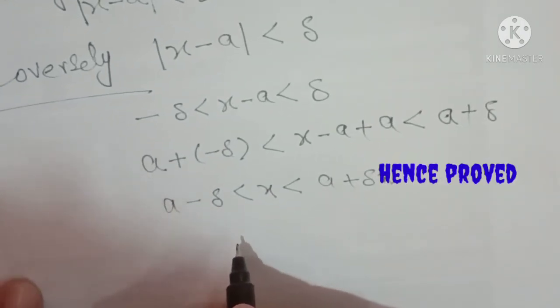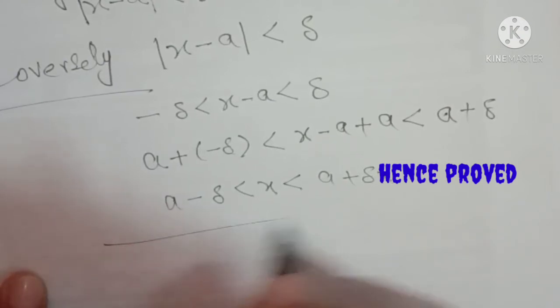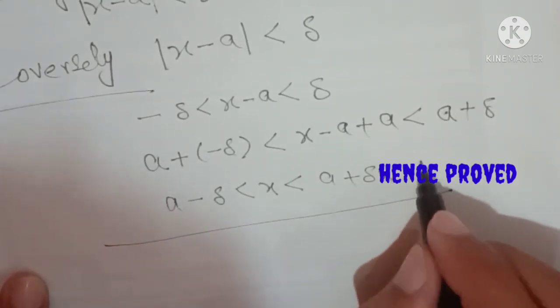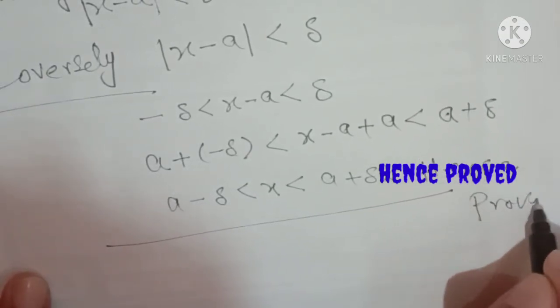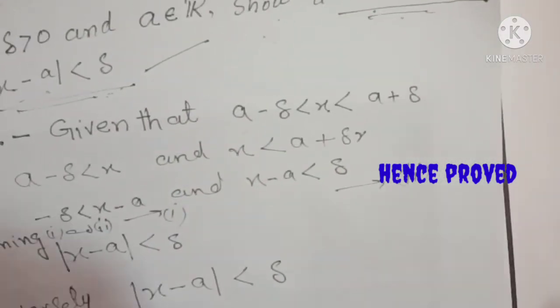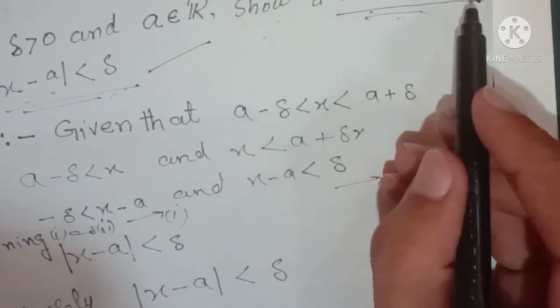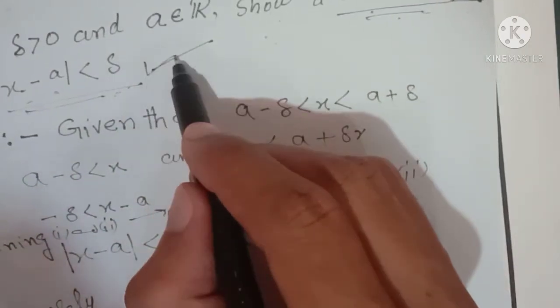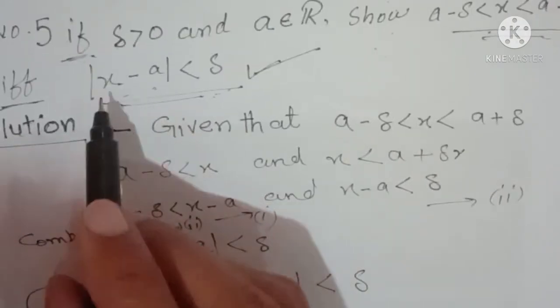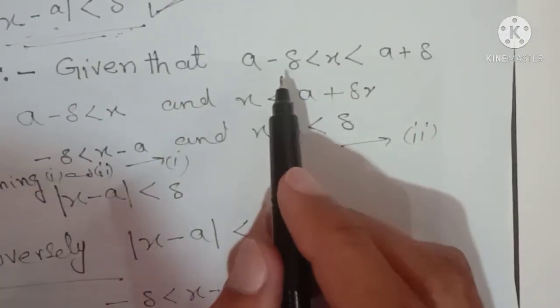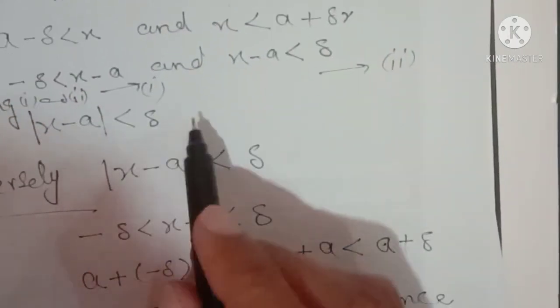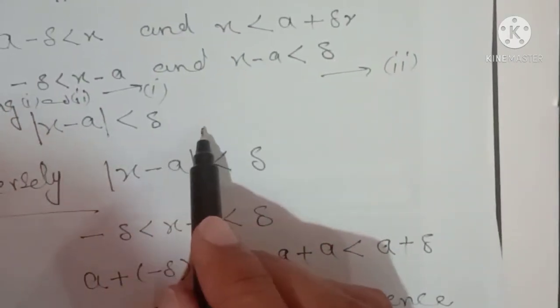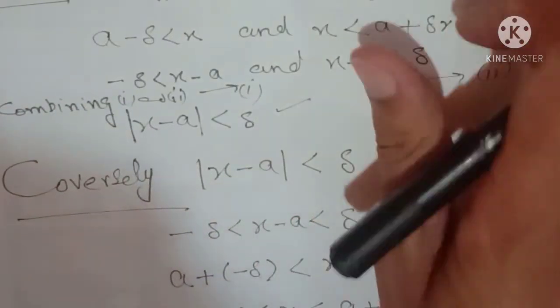So this is what we had to prove. To summarize: we were given a minus delta < x < a plus delta and had to prove |x minus a| < delta — and conversely, given |x minus a| < delta, we proved a minus delta < x < a plus delta.